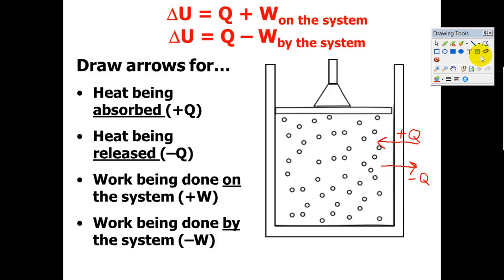Now the other part of this is work being done on or by the gas. We can show that if work is being done on the system, this would be work on because we're pushing down on the gas, or if the gas is pushing up, that would be work by. We think of work by the system as negative because it's going to take away from the energy of the molecules. Work on the system gives energy to those molecules. That's positive work.